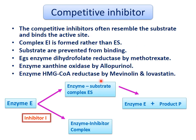In competitive inhibition, the enzyme E normally forms an enzyme-substrate complex which is then converted into product. But in the presence of a competitive inhibitor, which is similar to the substrate, it competes for the active site and forms an enzyme-inhibitor complex. This EI complex does not produce product, so EI is formed instead of ES, preventing substrate from binding.